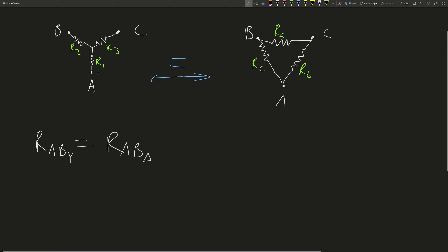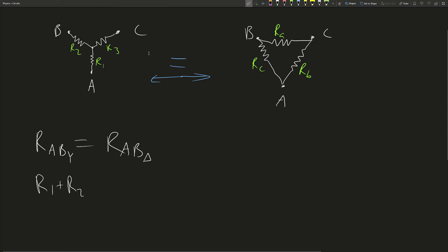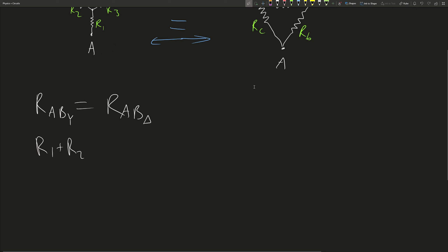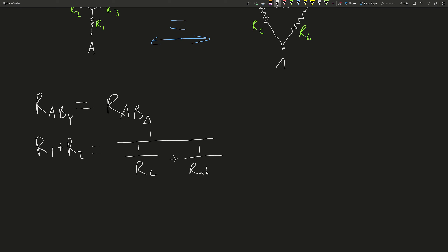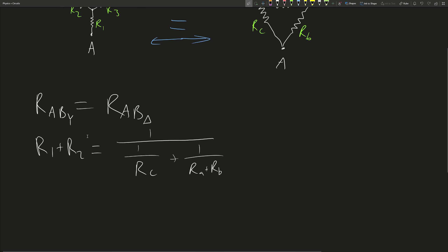The resistance from A to B on the Y configuration — you can ignore resistor R3 because it doesn't matter in this circuit path. The resistance is just R1 plus R2. For the delta configuration, RC is in parallel with RA and RB in series, so RA and RB are in series and that's in parallel with RC. The equivalent resistance is: 1 over RC plus 1 over (RA plus RB). This is the equation for the node pair AB.